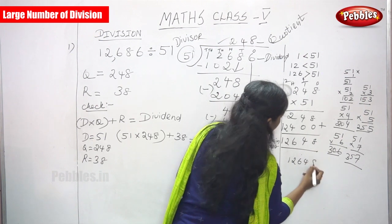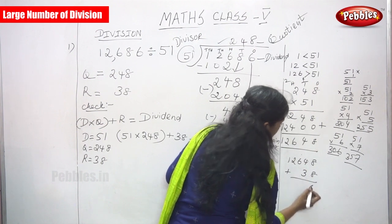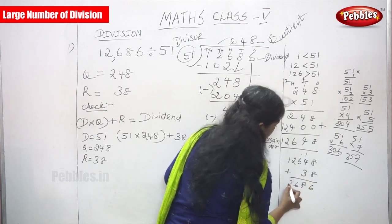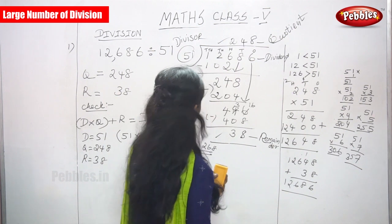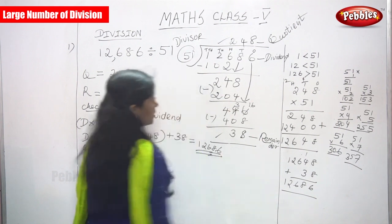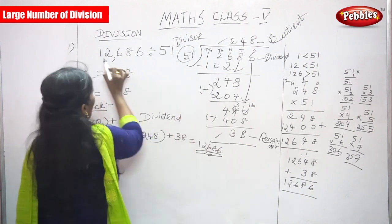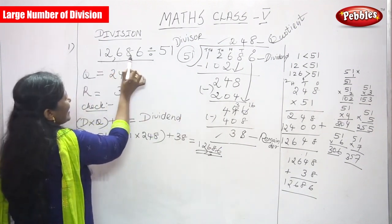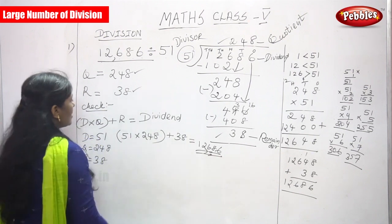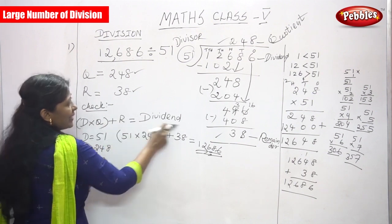Now add the remainder 38 to 12,648. 8+8=16, write 6 carry 1; 4+1+3=8; 6 stays 6; 2 stays 2; 1 stays 1 — giving 12,686. This confirms the answer is perfectly correct, because 12,686 is exactly our dividend. So: divisor × quotient + remainder = dividend. That is 51×248 + 38 = 12,686.